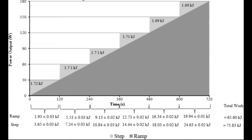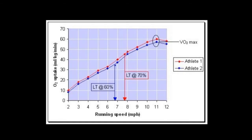This next graph tracks oxygen uptake across the graded exercise test. Similar to the resistance on the graded exercise test, you have a linear increase in oxygen consumption. As exercise intensity increases, so too does oxygen consumption in a rather linear fashion — around a 0.9 correlation coefficient, so they're very well correlated.